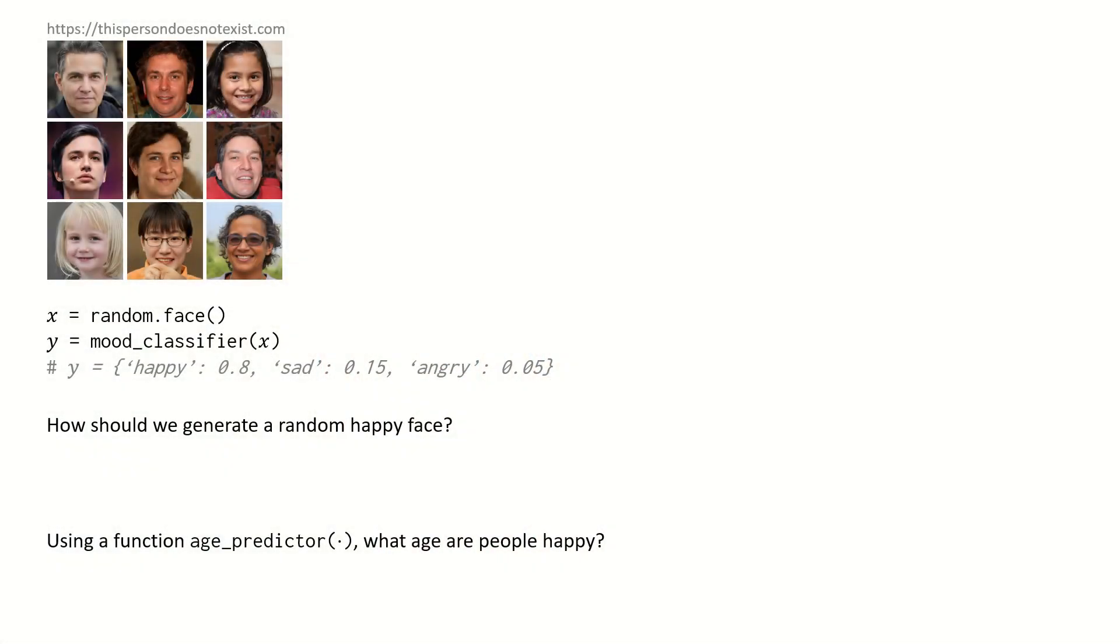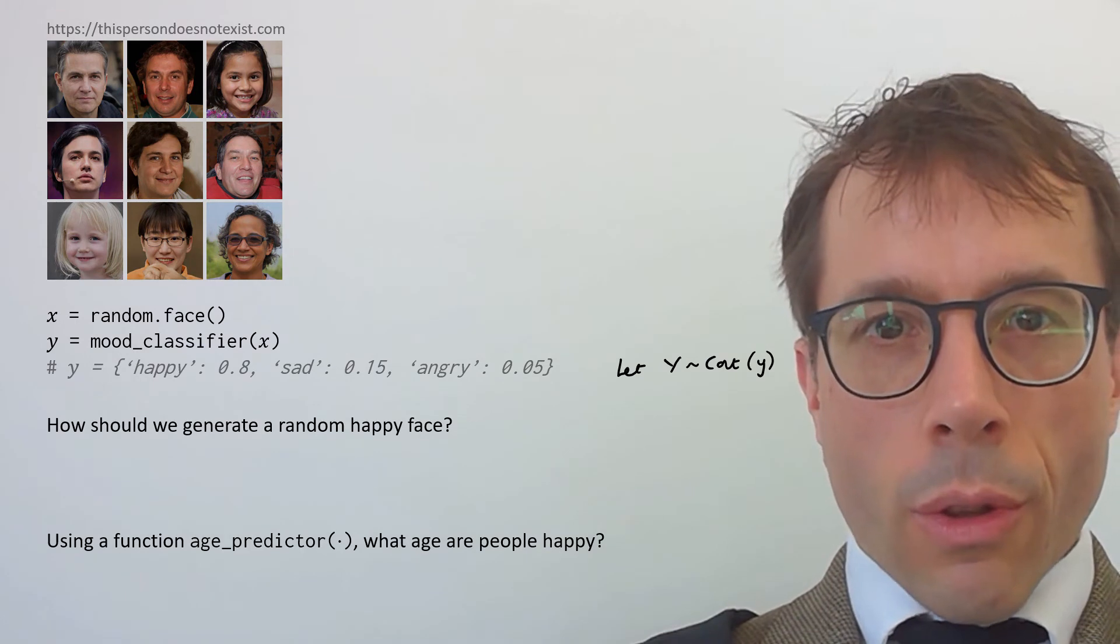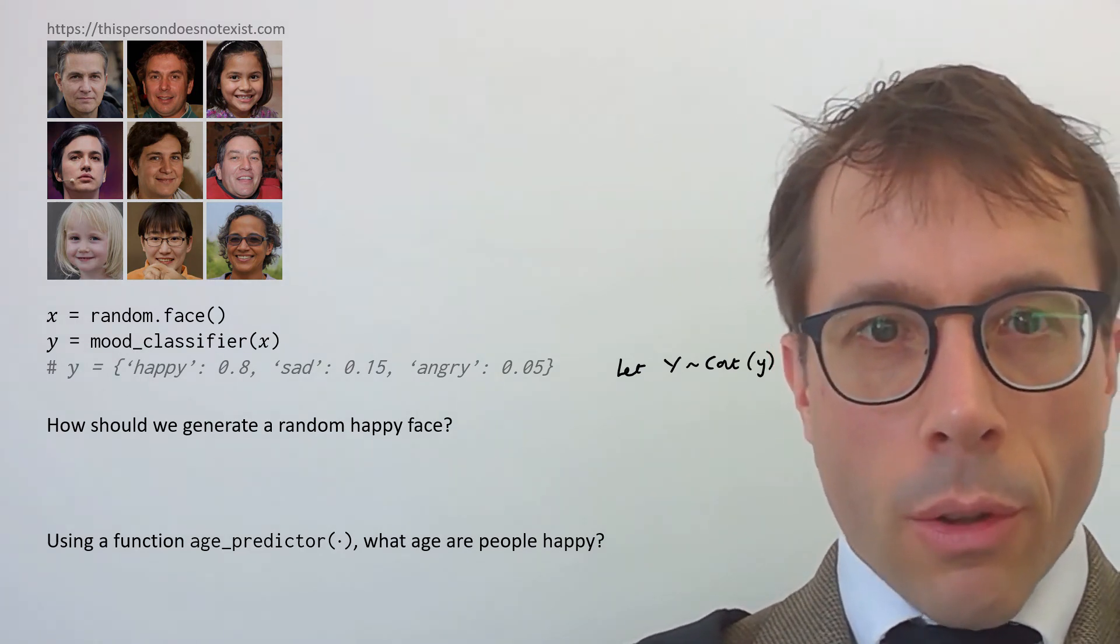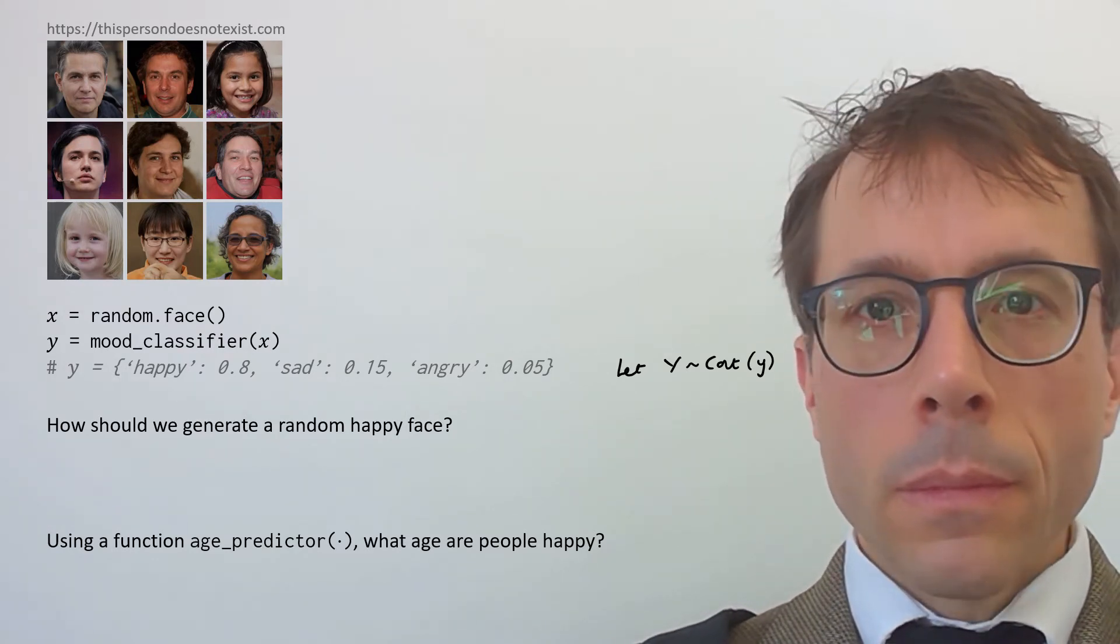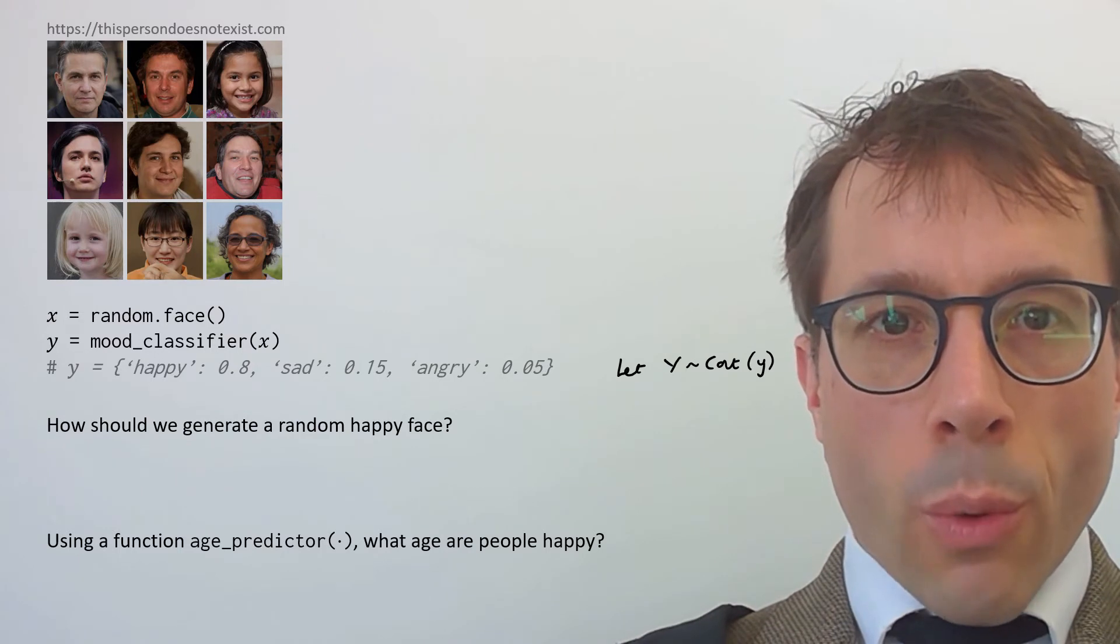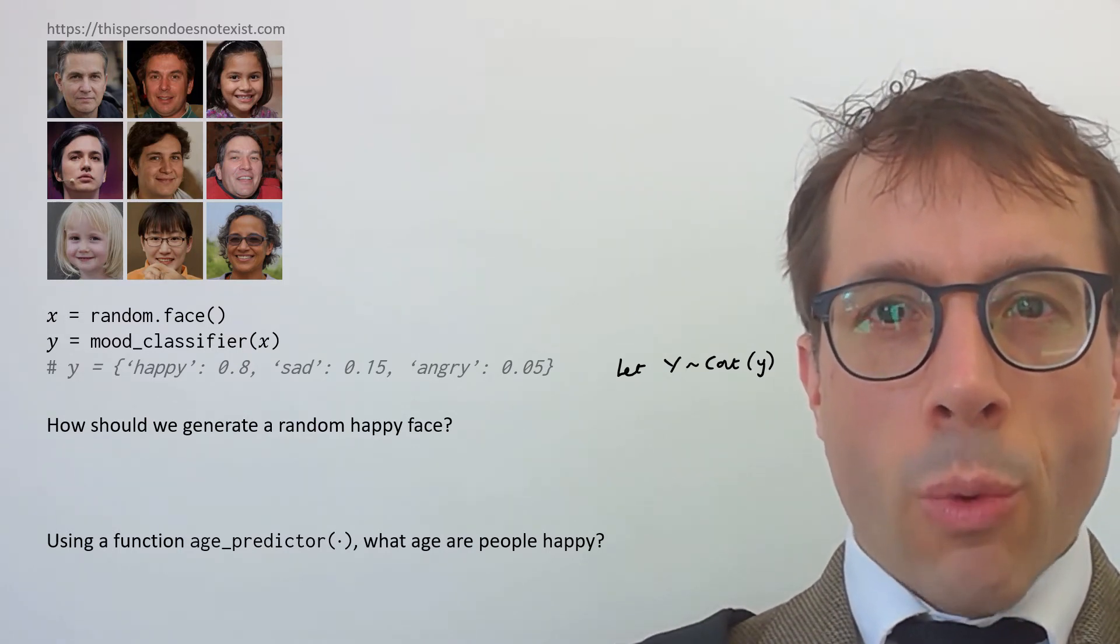Now, we have nearly everything we need to answer the question we posed at the beginning of this video. Let's just repeat. Suppose we have code that can generate random faces, and suppose we have a mood classifier that guesses the mood of a face, and which returns a list of scores for each mood, which we'll interpret as a categorical random variable. We imagine that the true mood is a random variable, big y, the probability that the true mood, the mood of this particular face, little x, the probability it's happy is 0.8, and so on. We posed a question at the beginning of the video, how to generate a random happy face?